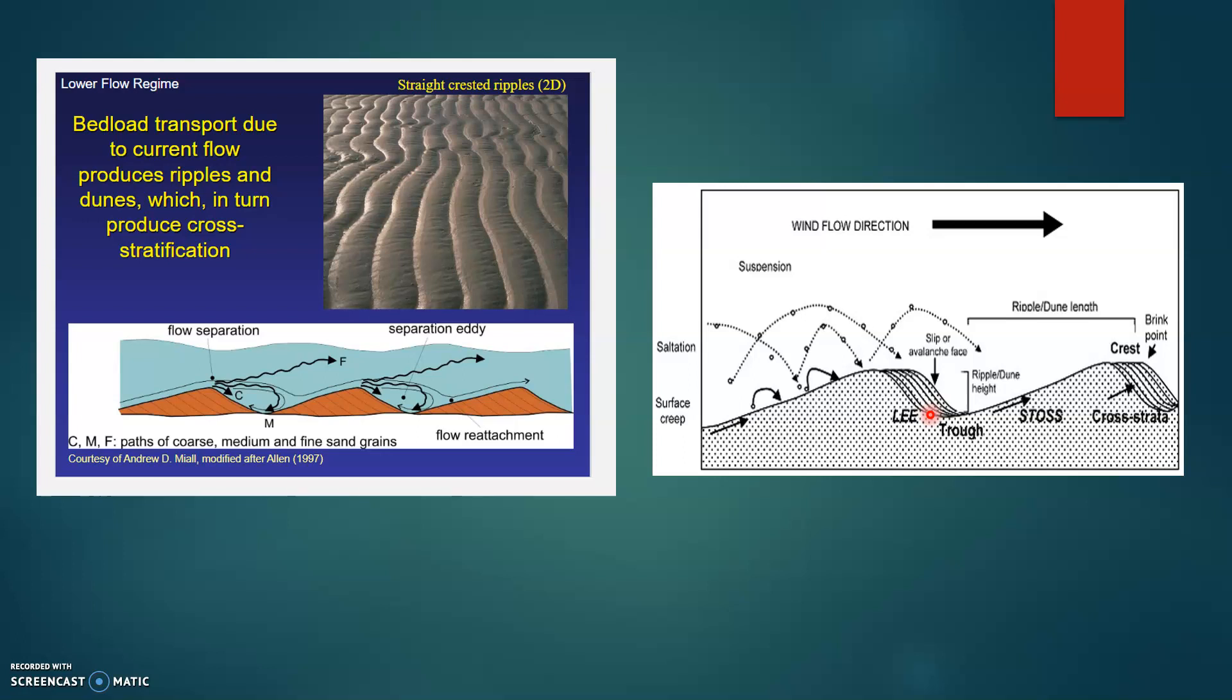Cross lamination, which is small scale cross stratification, is formed by ripples and cross bedding, which is large scale cross stratification, is produced by dunes. Cross stratified deposits can only be preserved when a bed form is not entirely eroded by subsequent bed forms. That is simply to say sediment input is greater than sediment output.